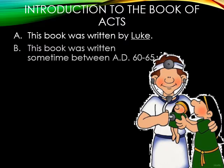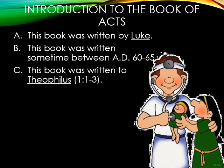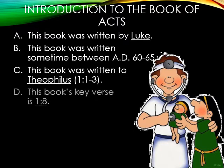Letter B: we believe this book was written sometime between A.D. 60 and A.D. 65, and it was written to a man named Theophilus. While we do not know exactly who this individual was, we do know that his name literally translates as 'Friend of God' or 'Loving Friend of God' in the Greek. And then letter D: this book's key verse is Acts 1:8.